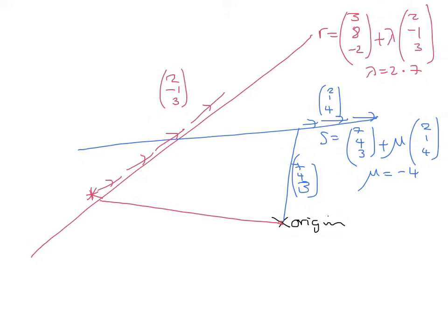Mu is about minus 4. So according to my picture, which is obviously just completely made up, you can see that if I start at the origin and do (7, 4, 3), and then do minus 4, reverse, 4 direction vectors, I'll end up at this intersection point. Or if I start at the origin and do (3, 8, -2), and then do 2.7 of the red direction vector, then I will also end up here.